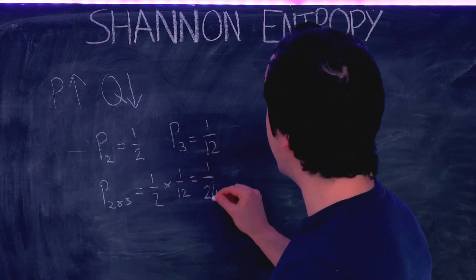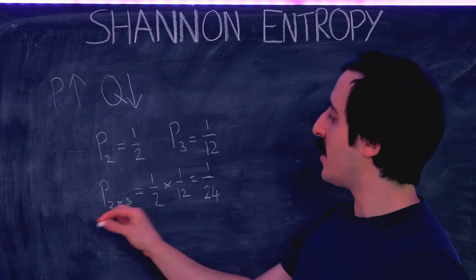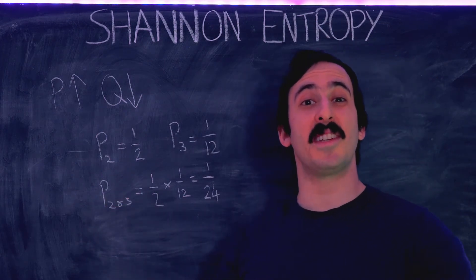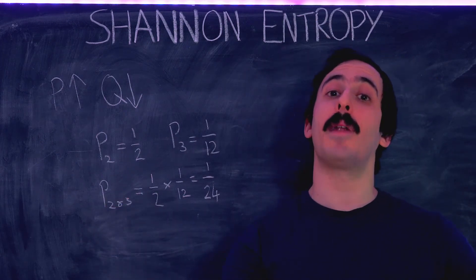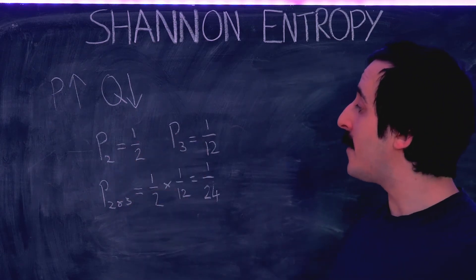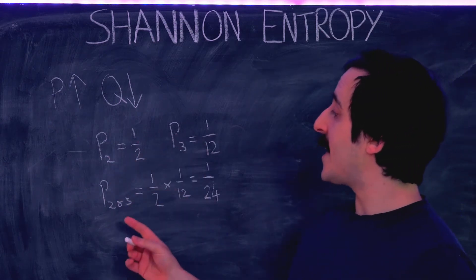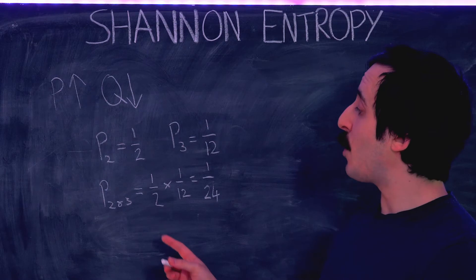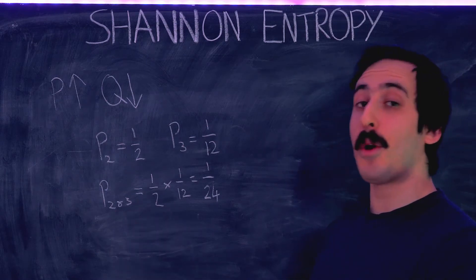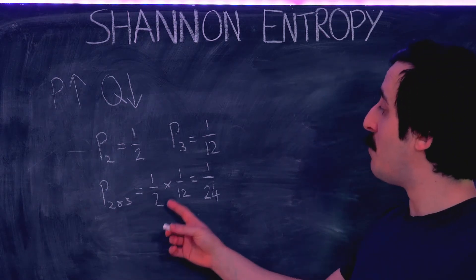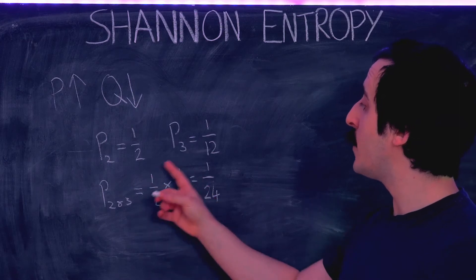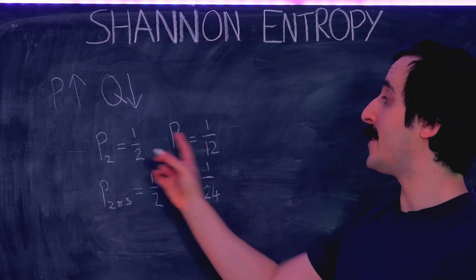This is always the case when our two statements are independent from one another — when one doesn't imply the other. So when statements are independent, the probability of both being true is equal to the product of the individual probabilities.